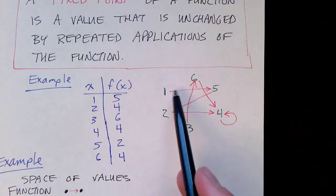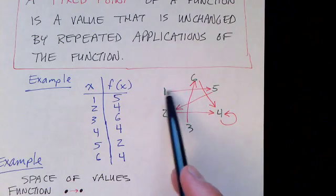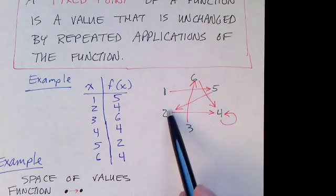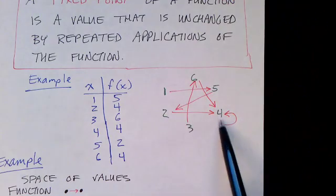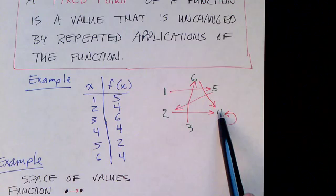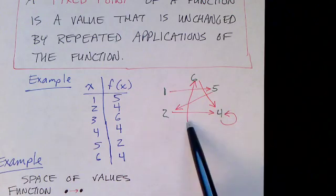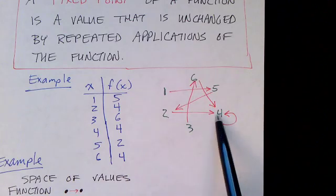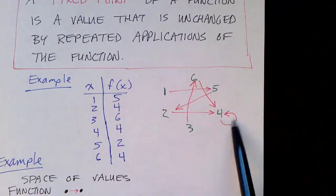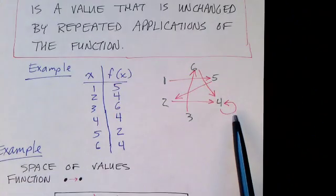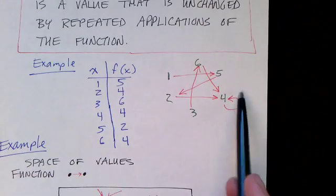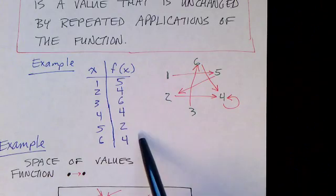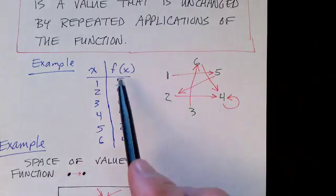If we start with 1 and apply the function we get 5. Apply it again we get 2, again we get 4, and again we stay at 4. We can also get to 4 this way: start with 3 and apply the function to get 6, then apply it to 6 and we get 4, and from then on we're stuck at 4. We can keep applying the function but we are stuck at 4. 4 for this function is a fixed point.